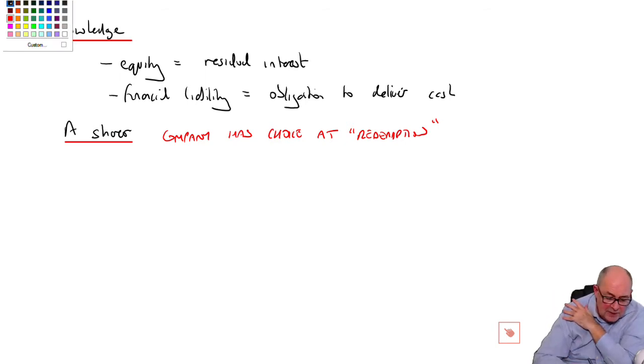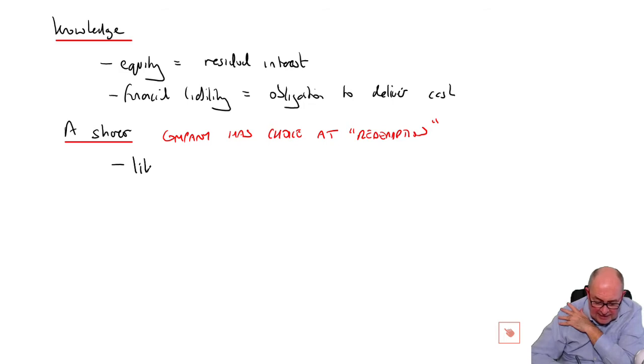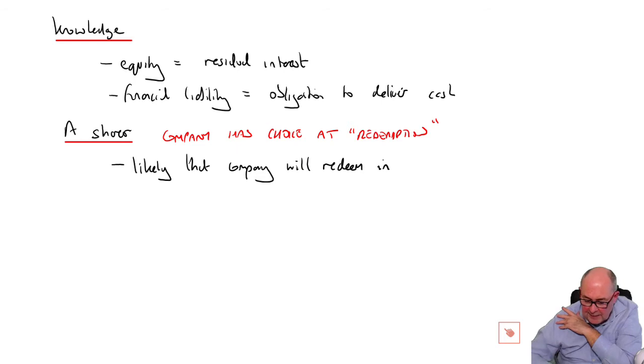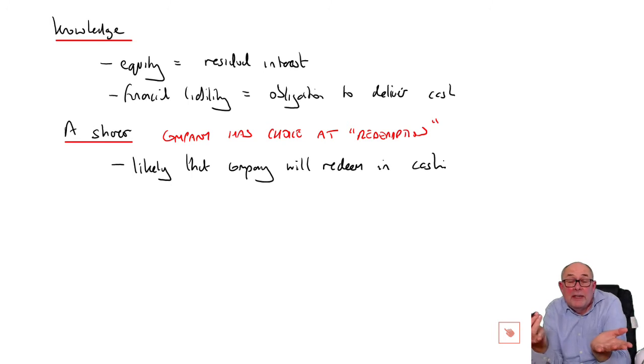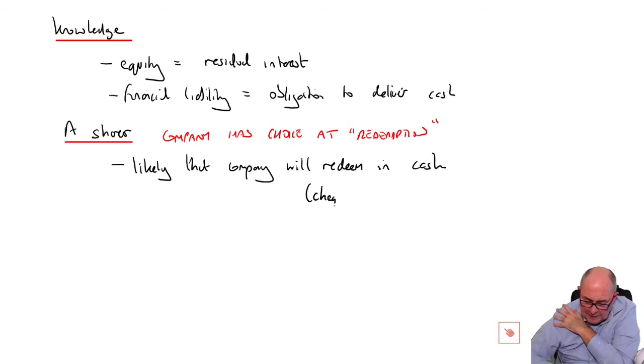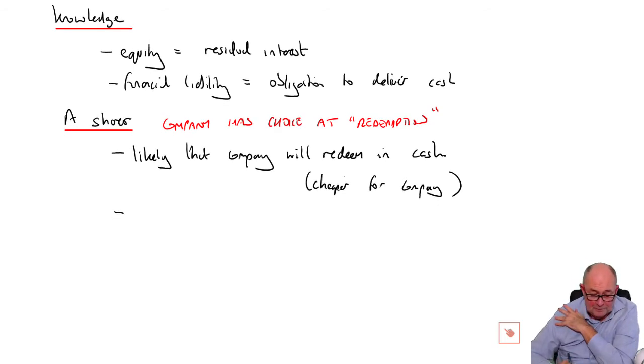So ultimately, I'd have thought that it is likely that the company will redeem in cash. And you can see cash for every thousand A shares, they're just going to have to give them $12,000. If they went down the share route, it will be $24,000. So I'm just saying, look, this is cheaper for the company. So in conclusion, therefore, I think that's a financial liability.